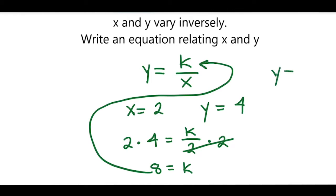So now I have y equals 8 divided by x. And that's how you write an equation relating x and y when x and y vary inversely.